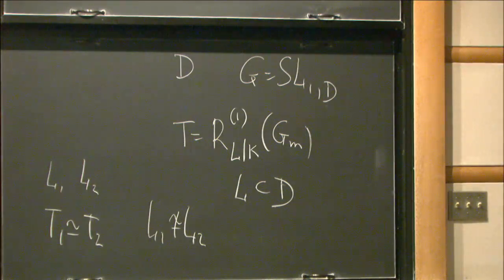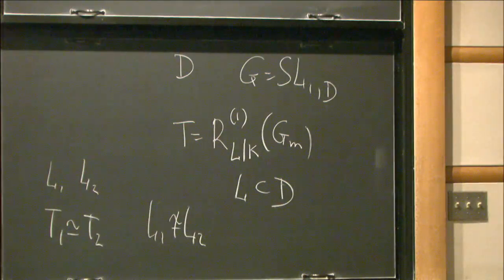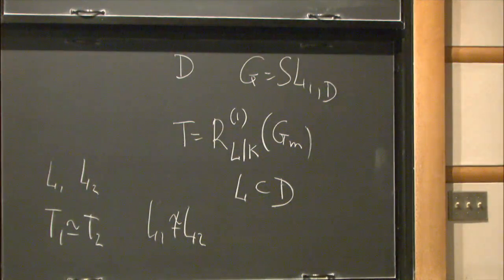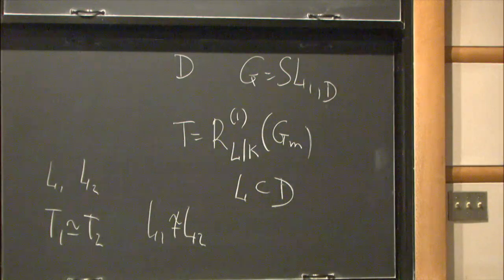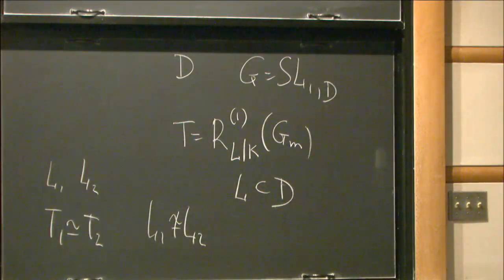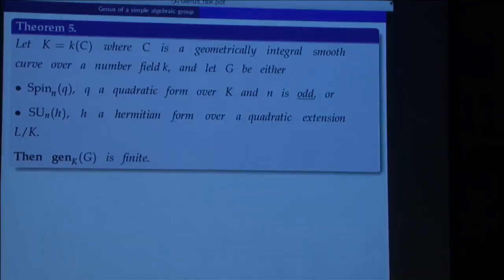By slightly tweaking the argument used for division algebras, one can prove that if we have a central division algebra of exponent 2 over a purely transcendental extension of a number field, then the genus of the algebraic group SL_1(D) always reduces to one element — these groups are uniquely determined by their maximal tori. And if the degree of D is prime to the characteristic, the genus is finite. Recently we obtained some results for spinor and other groups.